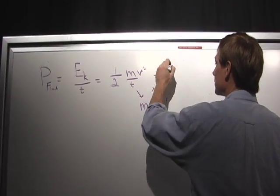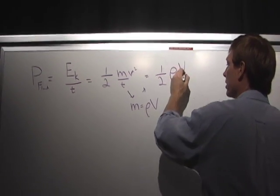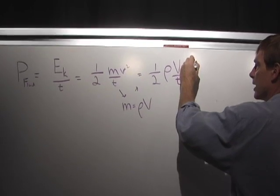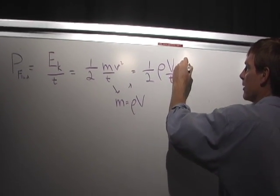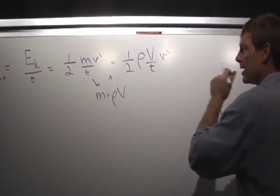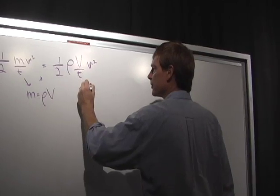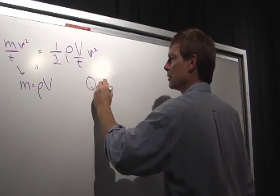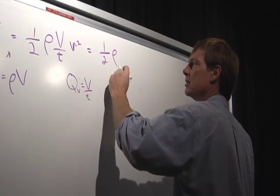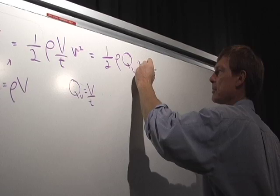And that gives us 1/2 times mass density times volume over time times velocity squared. So all I've done is I've taken mass and converted it to mass density times volume. Now, volume over time, that's volume flow rate. So I can rewrite this as 1/2 times the mass density times the volume flow rate times the velocity squared.